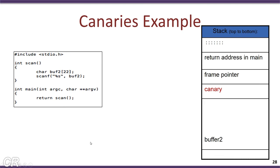Let us see how canaries actually work internally with a small example. We have two functions: main and scan. Main invokes scan and returns. In the scan function, we declare a local buffer of 22 bytes — since it is a local variable, this array gets allocated on the stack. We then invoke scanf to read a string from the user. This scanf call is a potential buffer overflow, because the user could enter a string much larger than 22 bytes, causing buffer overflow.